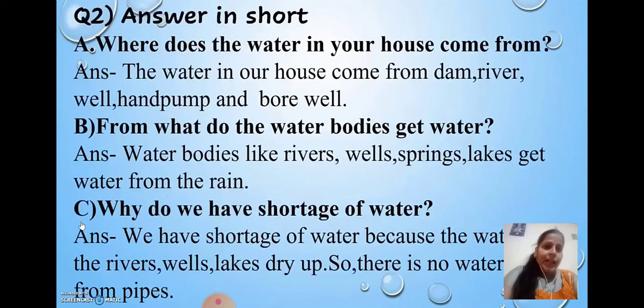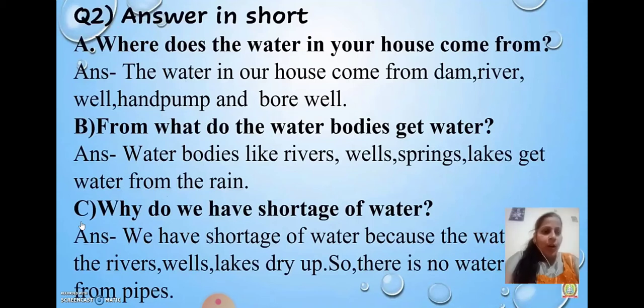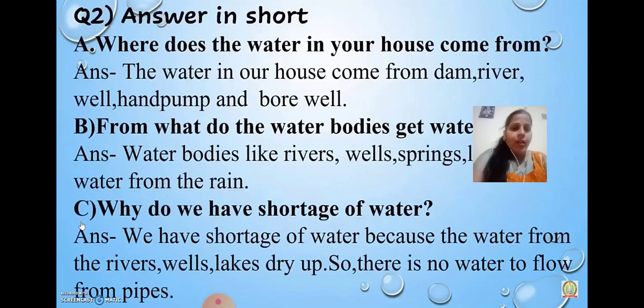springs, lakes get water from the rain. Number C: Why do we have a shortage of water? Answer: We have a shortage of water because the water from the rivers, wells, lakes dry up, so there is no water to flow from pipes.